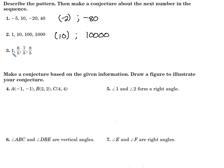For number 3, we have 1, then 6 fifths, 7 fifths, 8 fifths. We kind of see the pattern with the last 3. We may not see it with this 1. Well, 1 can be rewritten as 5 over 5.